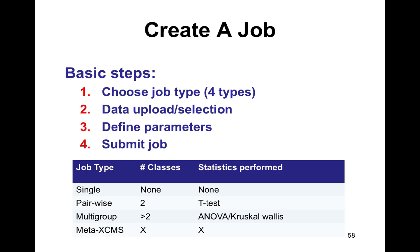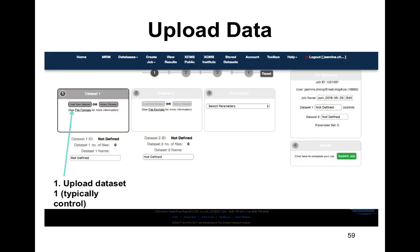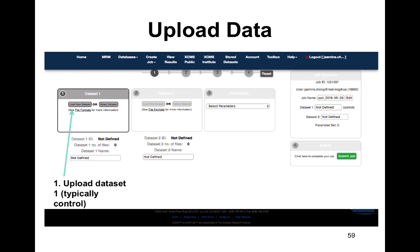Once you receive your email notification, you can view and download results. There are graphical summaries and comma-separated or Excel-like tables with identifiers, retention times, average intensity, individual peak intensities, mass, precursor mass, and so on.